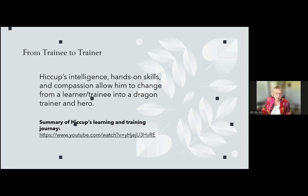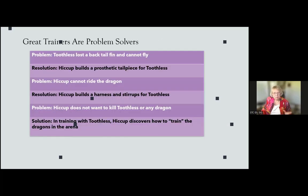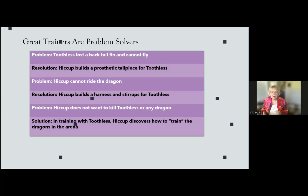That was a summary of Hiccup's learning and training journey. The clip was a little glitchy, so I'll provide links in the chat. The key idea is that Toothless is a great problem solver — and that's what we really want to be as trainers. For example, Toothless lost a back tail fin and can't fly. The resolution is that Hiccup builds a prosthetic tailpiece for Toothless. Then, because Hiccup can't get on the dragon, he builds a harness and stirrups so he can navigate using that equipment.